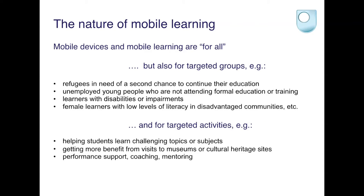Thinking about the nature of mobile learning — many people now carry around different kinds of devices and make use of them in personal ways: taking photographs, making notes, sharing on social media. The technology is described as ubiquitous — it has pervaded societies, not everywhere across the world, but in many countries. So in a sense, mobile technologies and mobile learning are for everyone. But it is also true that the way they're used is often for targeted groups and targeted activities.